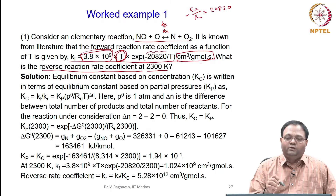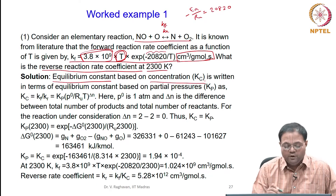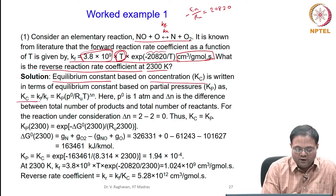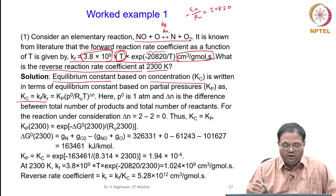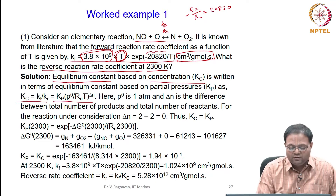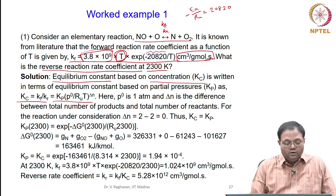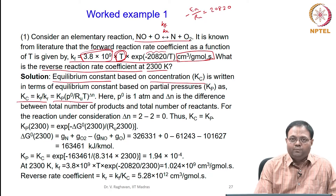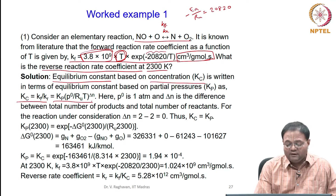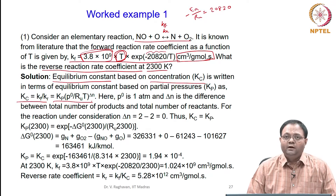We assume equilibrium. The equilibrium constant based on concentration, Kc, equals the forward reaction rate coefficient divided by the reverse reaction rate coefficient. Kc is connected to Kp by the equation: Kc equals Kp times (P_atm / RuT) to the power delta-N, where delta-N is the difference between moles of products and reactants.